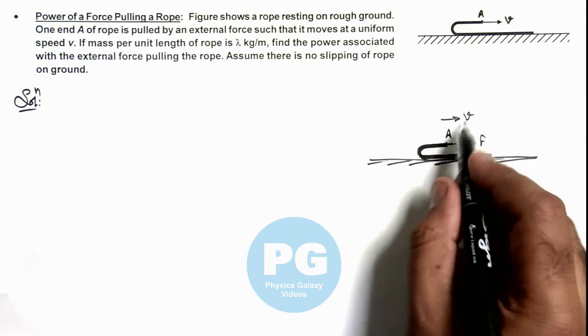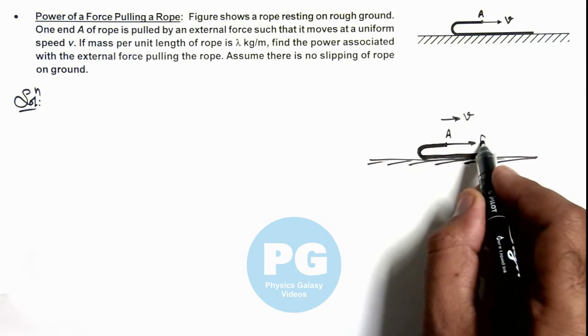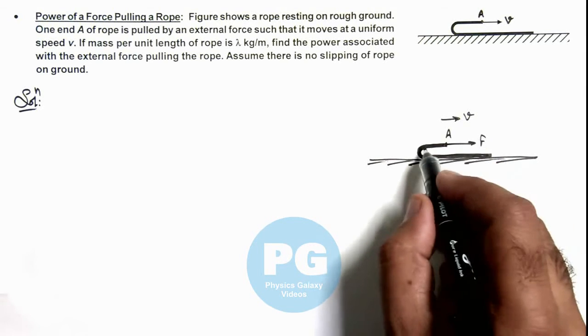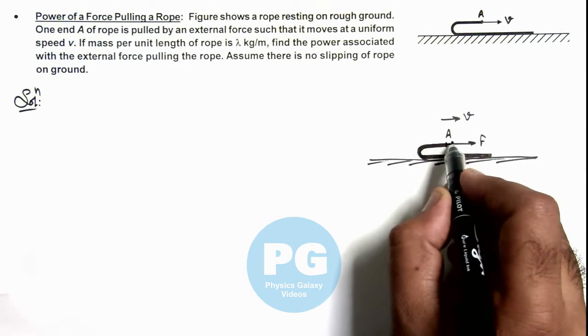Here we can see if the speed is uniform, the force is not accelerating. That means the whole amount of force is imparting momentum to that part of chain which is shifted from ground to the moving part.